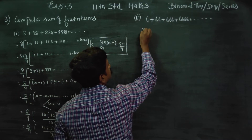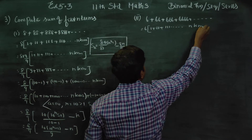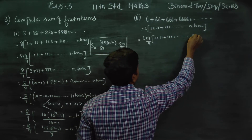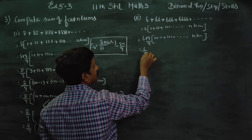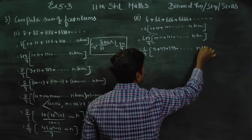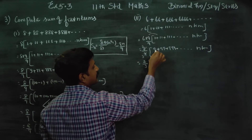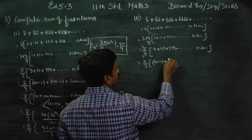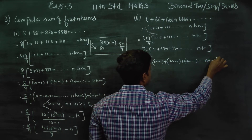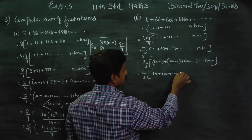For the second sub-division, using the same model: start with 1 plus 11 plus 111 dot dot dot n terms. Multiply and divide by 9. This gives 6 by 9 of the quantity 9 plus 99 plus 999 dot dot dot n terms. Cancel 6 by 9 to get 2 by 3. Then rewrite: 9 as 10 minus 1, 99 as 100 minus 1, 999 as 1000 minus 1 dot dot dot n terms, giving 2 by 3 of 10 plus 100 plus 1000 dot dot dot n terms.